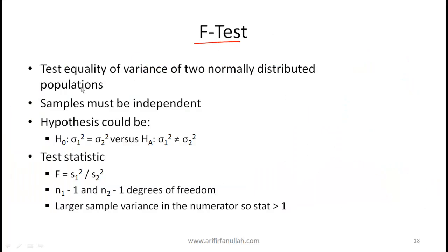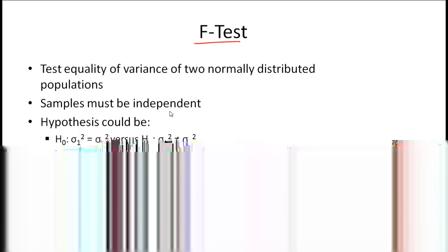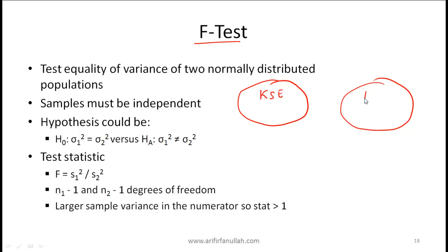The F-test is used to test equality of variances of two normally distributed populations, with independent samples. Using Karachi and Lahore again: if we believe the variances differ, the null hypothesis is H0: sigma1-squared equals sigma2-squared, versus H1: sigma1-squared not equal to sigma2-squared.